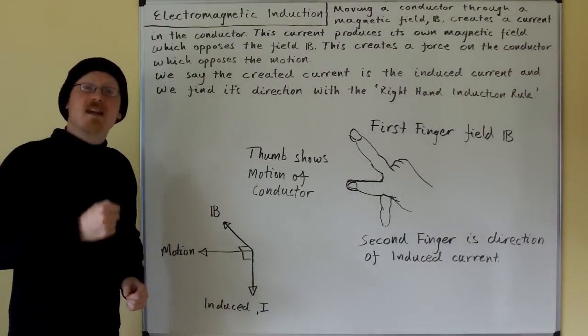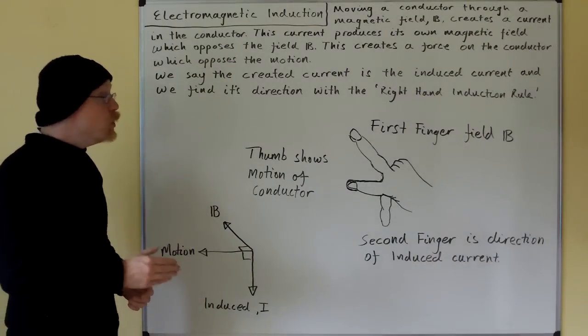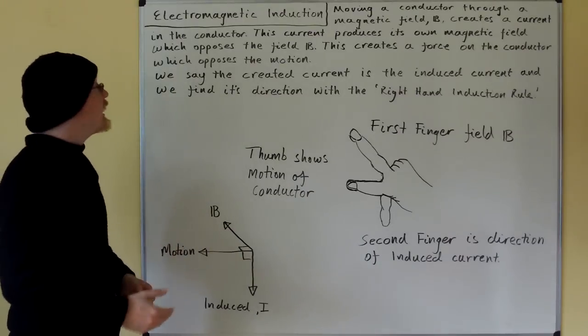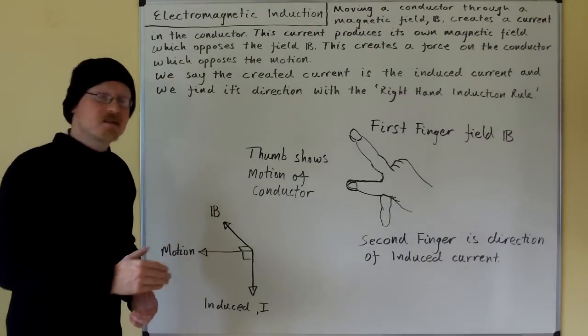Hi! Electromagnetic induction. Moving a conductor through a magnetic field B creates a current in the conductor.